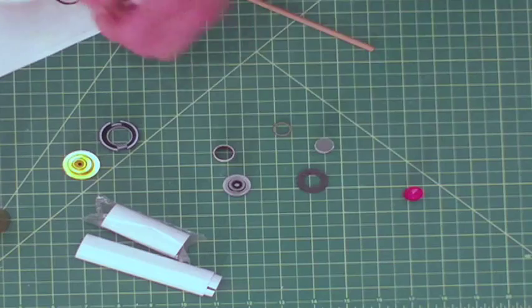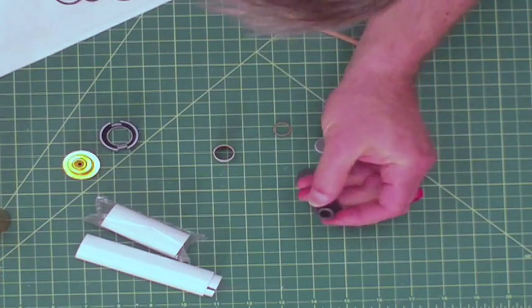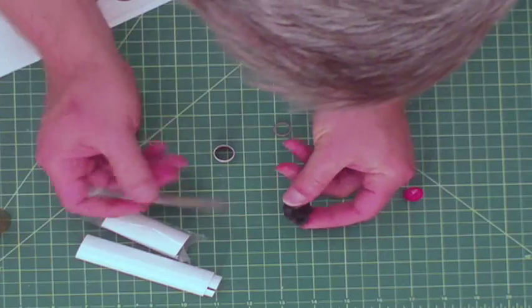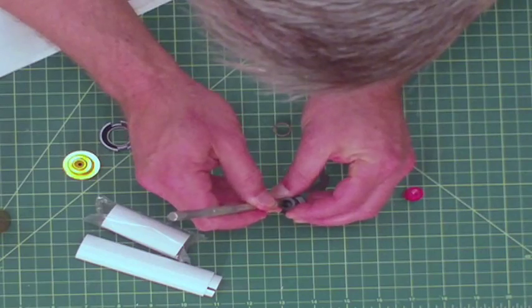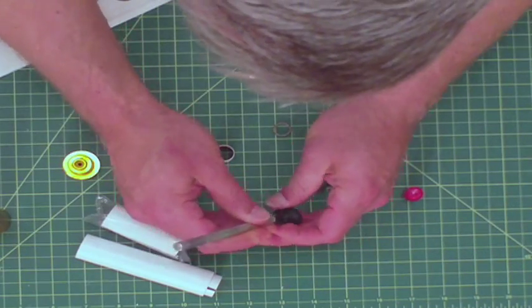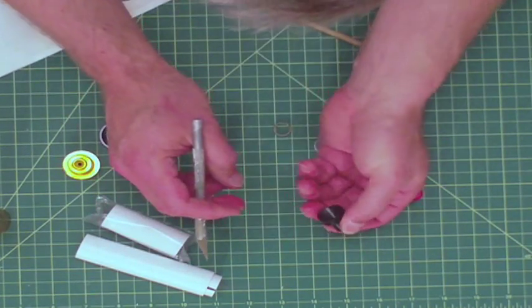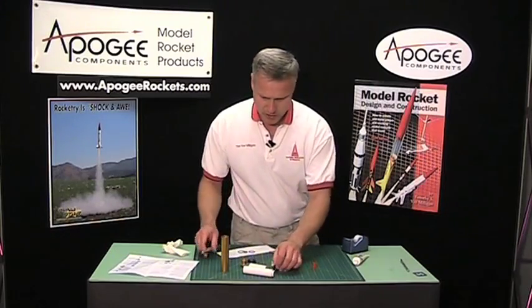Next, we want to take the nozzle and inspect the inside. This one has a little bit of plastic flashing in there, so I'm going to take an exacto knife and clean it out so I can look through it.